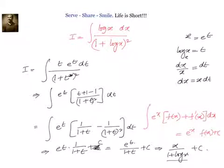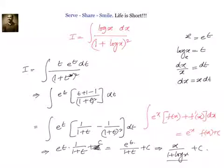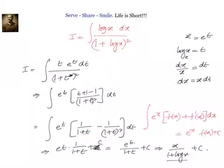We write t as t plus 1 minus 1 to get it into the standard integral format of e power x into f of x plus f dash x. The integral equals e power x f of x. Now t plus 1 by 1 plus t whole square equals 1 by 1 plus t minus 1 by 1 plus t whole square. This 1 by 1 plus t is our f of x, and minus 1 by 1 plus t whole square is our f dash x, since the derivative of 1 by 1 plus t is minus 1 by 1 plus t whole square.